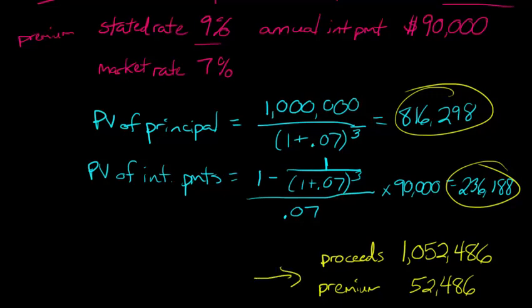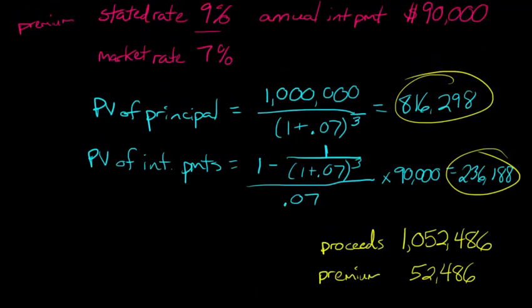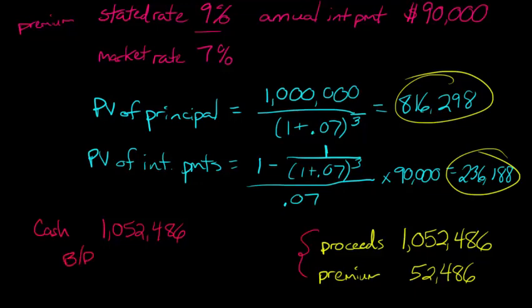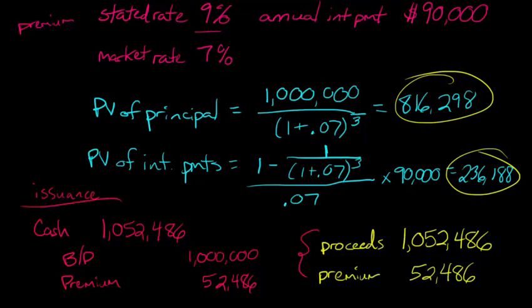We're going to have to amortize this premium over time throughout the life of the bond, which gets complicated — so it's best to put together a schedule. But before that, let me put the journal entry here to make things clear. At the date of issuance, we debit cash for $1,052,486 — that's the proceeds. Then we credit bonds payable for $1,000,000. Since the debits and credits don't match, that's where the premium comes in: we credit premium on bond payable for $52,486. This is recorded at issuance, not when we pay interest.